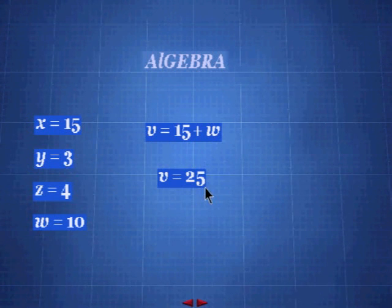So it's 15 plus 10, which is 25. So v equals 25. So we just solved our first exercise. It was really fun, huh? No nuts.